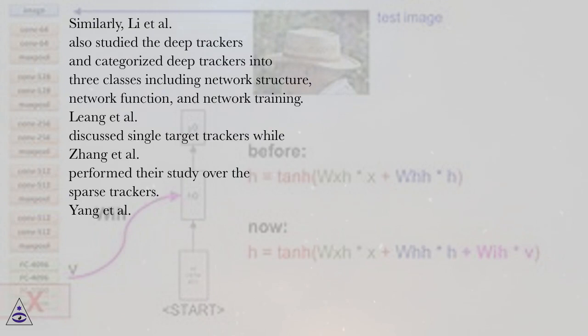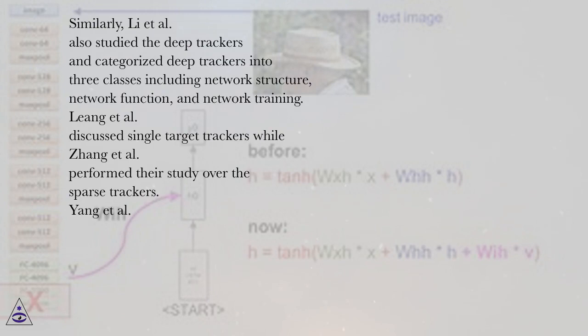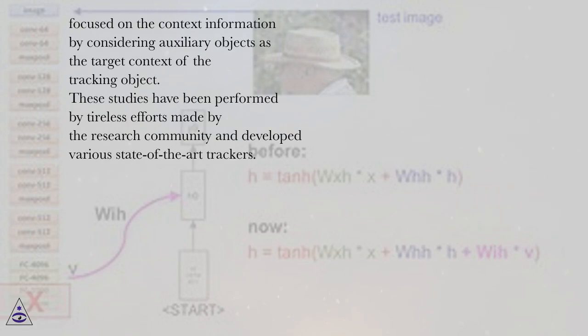Similarly, Lee et al. also studied the deep trackers and categorized deep trackers into three classes including network structure, network function, and network training. Lee et al. discussed single-target trackers while Zhang et al. performed their study over the sparse trackers. Yang et al. focused on the context information by considering auxiliary objects as the target context of the tracking object.